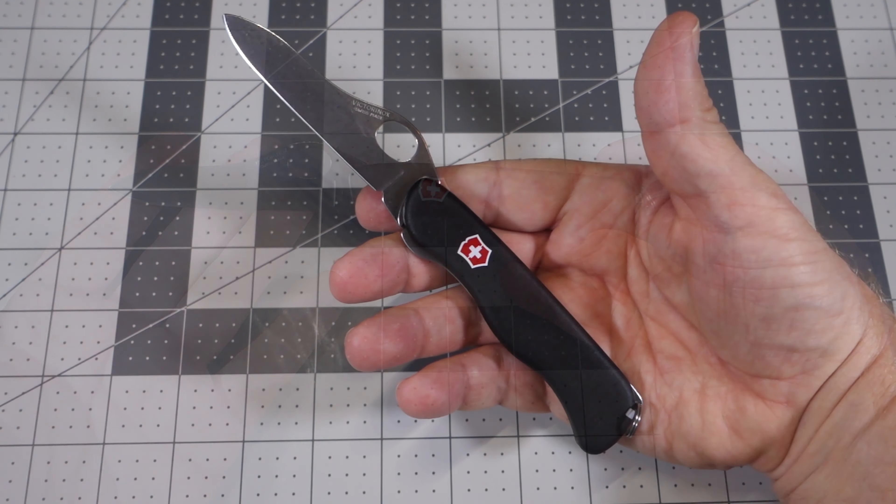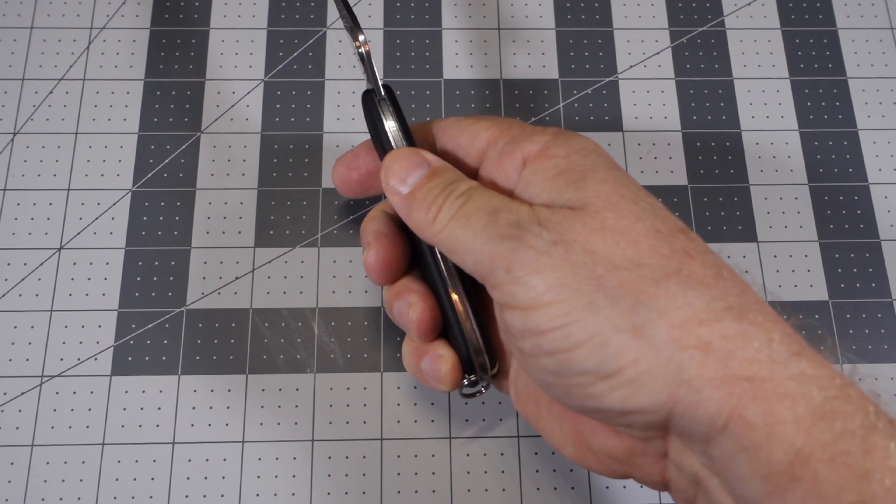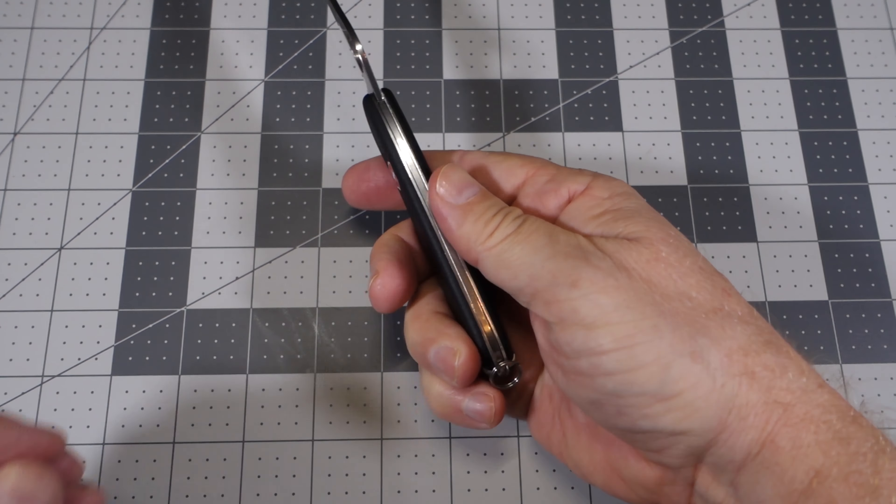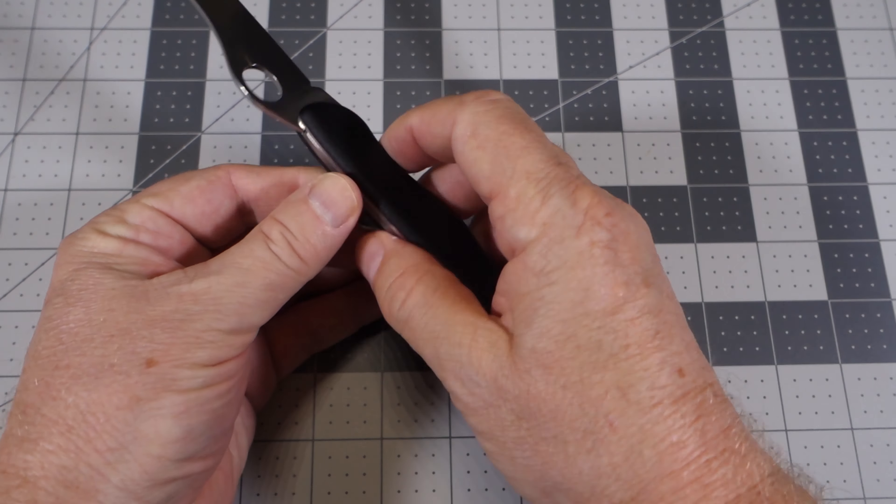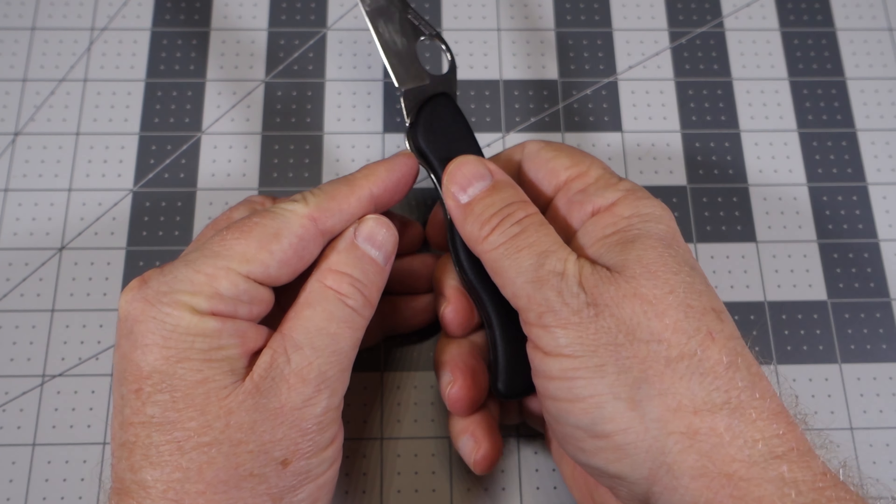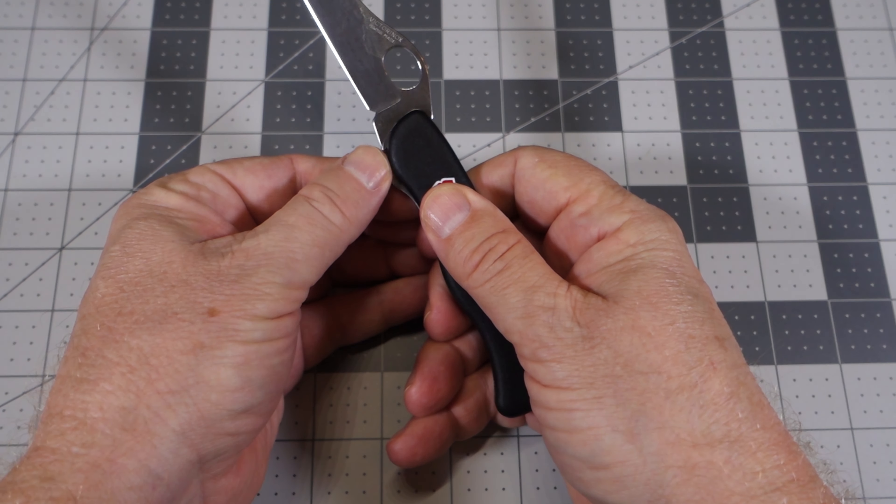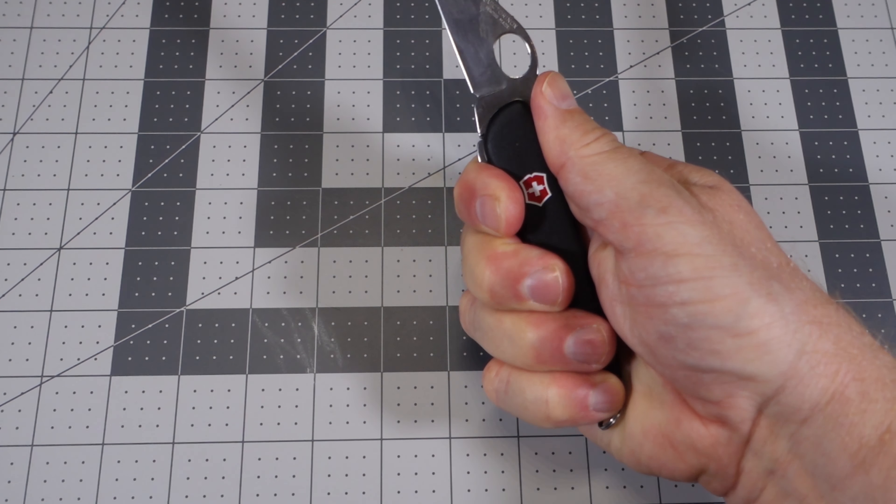So looking at the ergonomics of this knife, the handle is very smooth, very comfortable. There are no protrusions on either side of the blade. The liner lock does stick out a little bit right here from the handle but it's a comfortable fit.